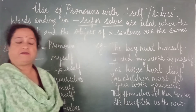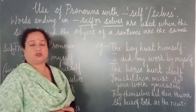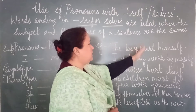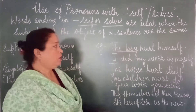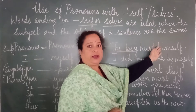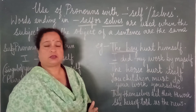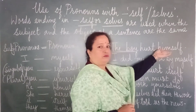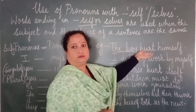Now children, I have written certain sentences for you. So let us understand them where we are using self or selves. The first one: the boy hurt himself. So when we are talking about a subject in the singular form, we write himself — H-I-M-S-E-L-F. So who did the boy hurt? He hurt himself. We find the reflexive pronoun after the verb.